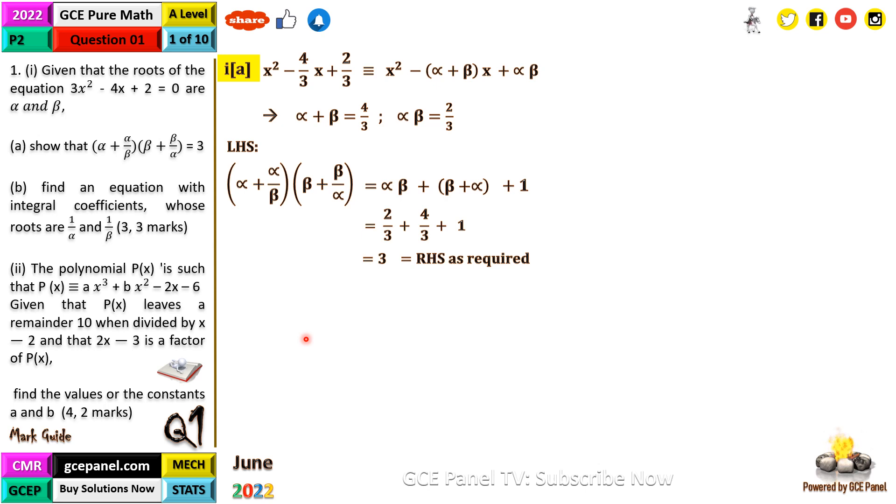Part B: Find an equation with integral coefficients whose roots are 1/α and 1/β. To find a new equation, we need the sum of roots and the product of roots.